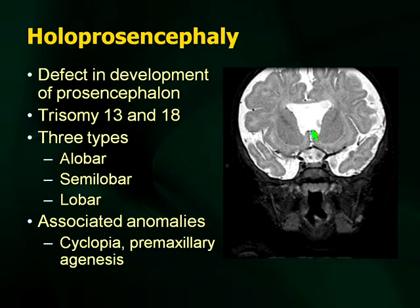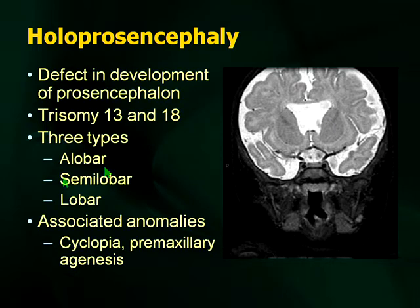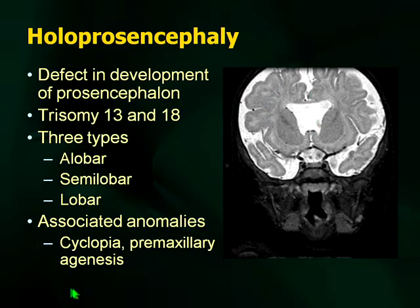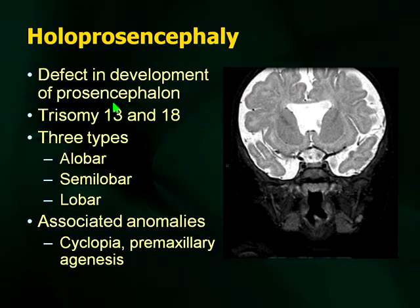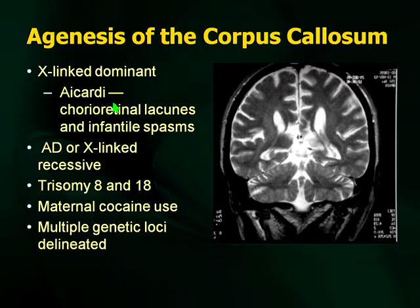Holoprosencephaly is another commonly quizzed anomaly — a defect in the development of the prosencephalon when the brain and areas around the thalamus and hypothalamus are being separated. You can get extremes: alobar, semilobar, and lobar. In alobar holoprosencephaly there is failure of midline division. The spectrum involves midline brain problems with external manifestations including cyclopia and premaxillary agenesis. You may get a picture of cyclopia and be asked what you might see in the brain. Trisomy 13 and 18 are associated.